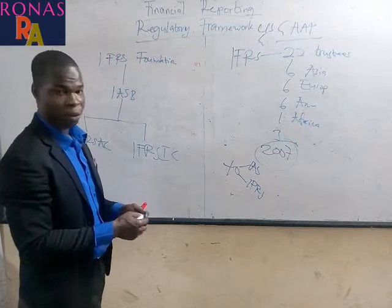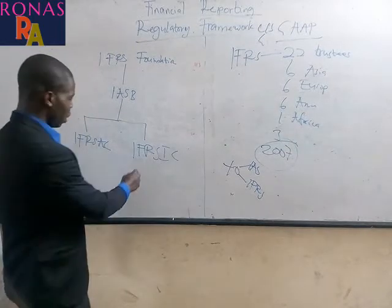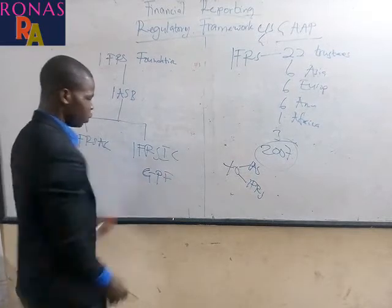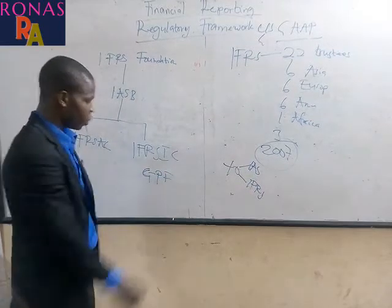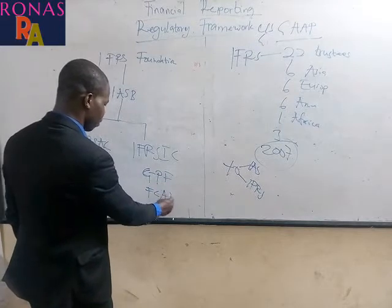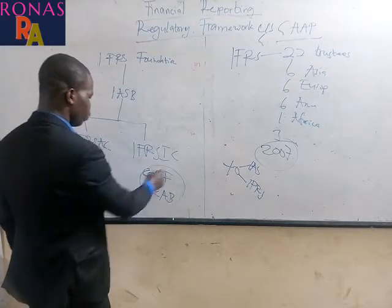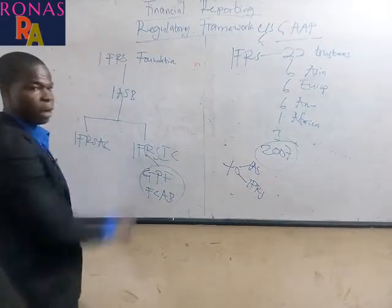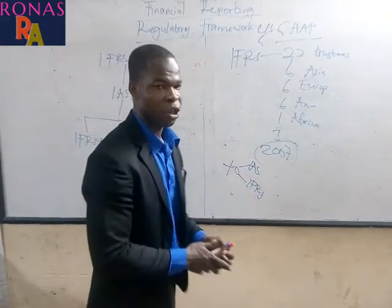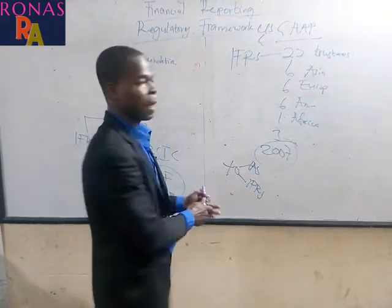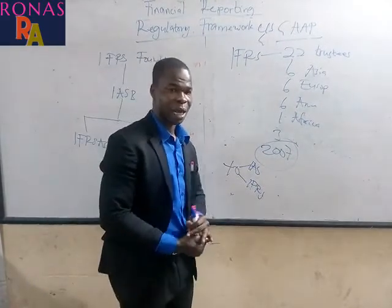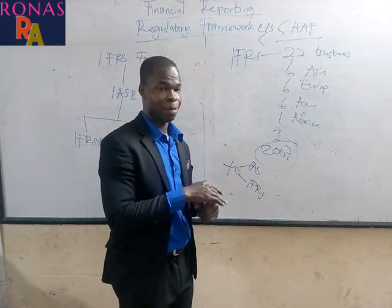Aside the main board, there are other boards that also help in the issuing of accounting standards. We have the Global Preparers Forum and the Financial Crisis Advisory Board. These two help the main board in the releasing or issuing of new standards. This group is funded by a non-governmental organization, so they are very high in independence.